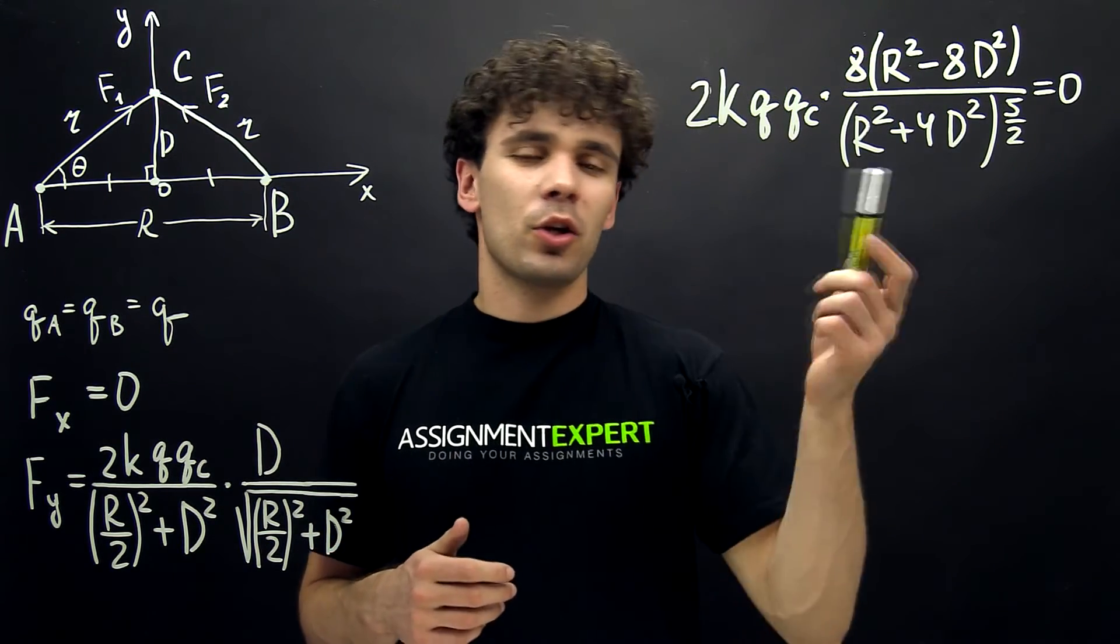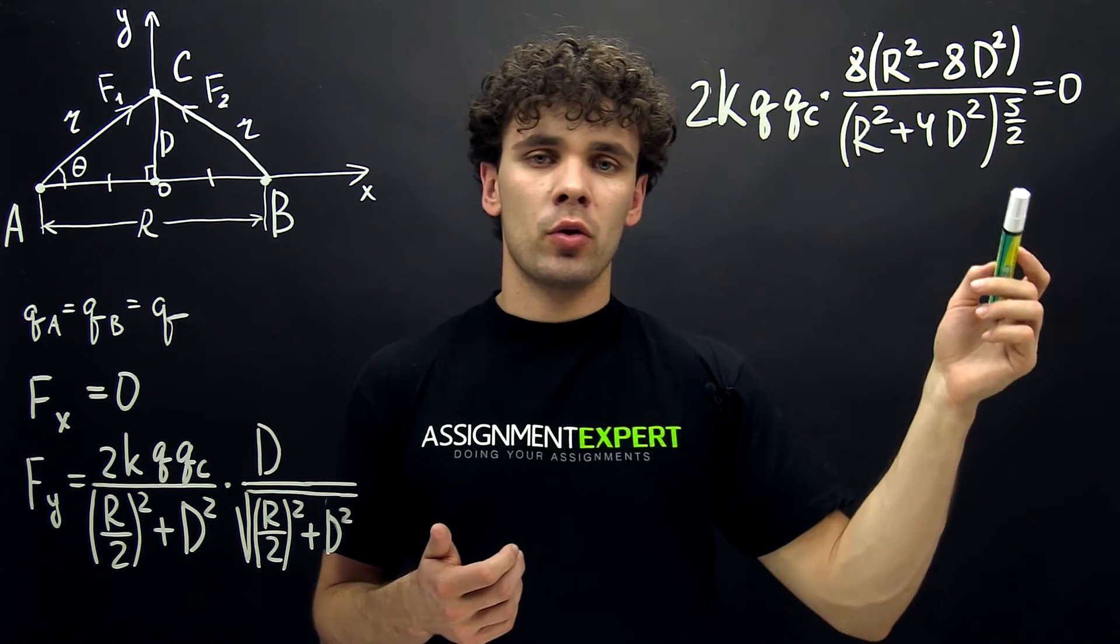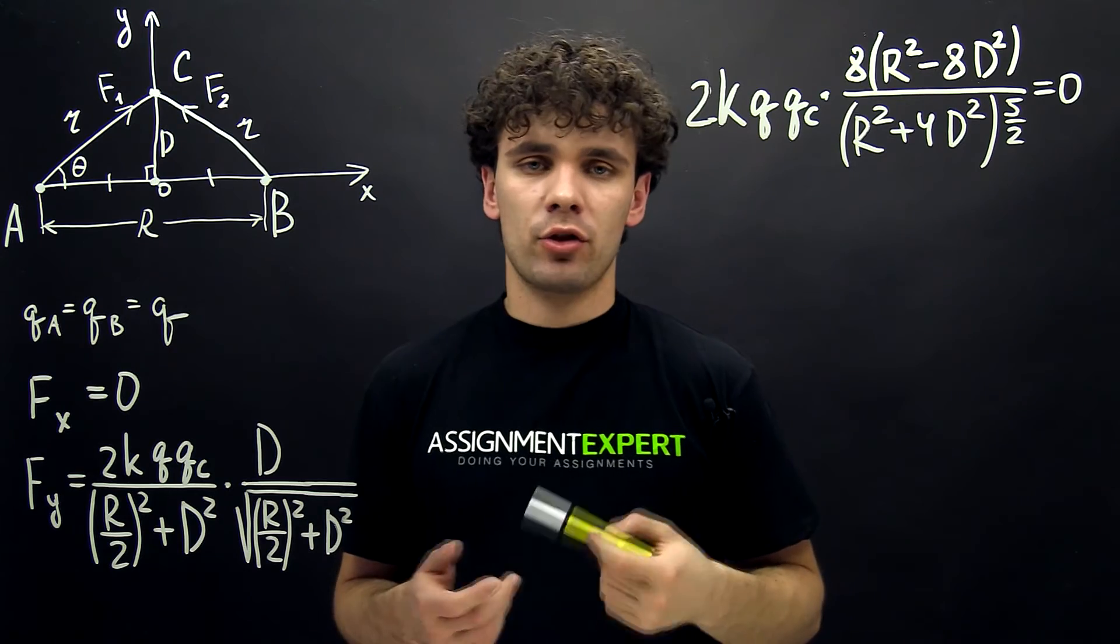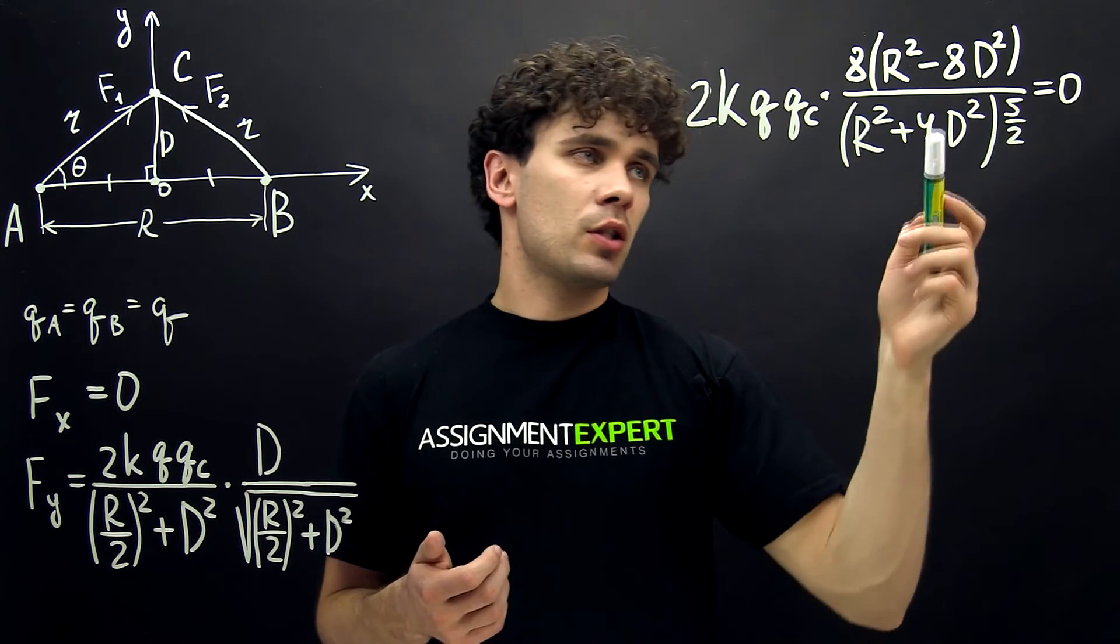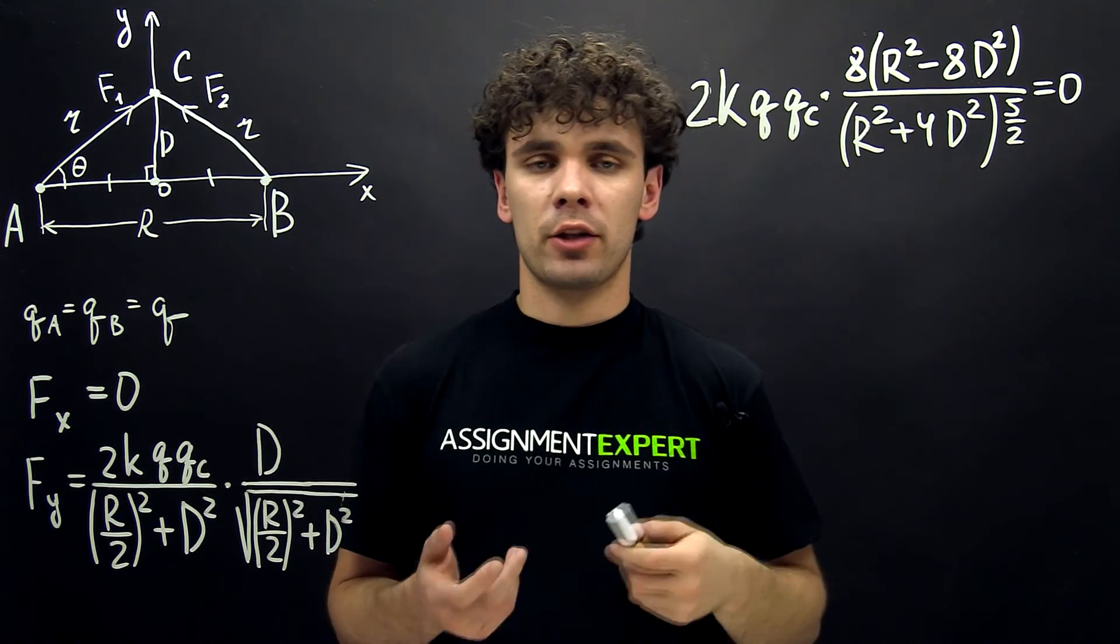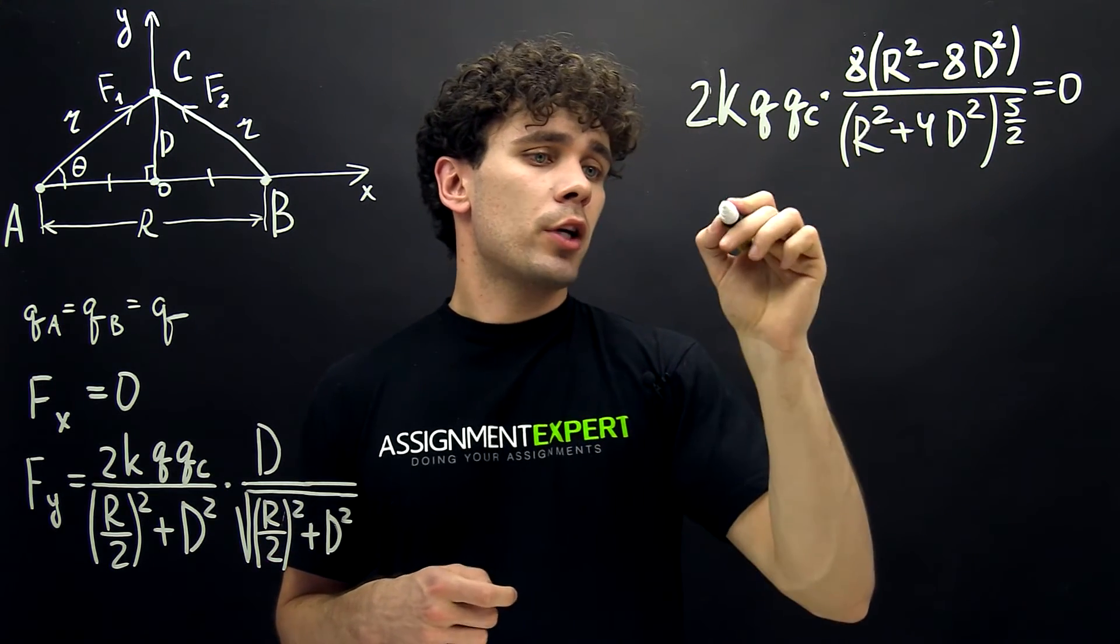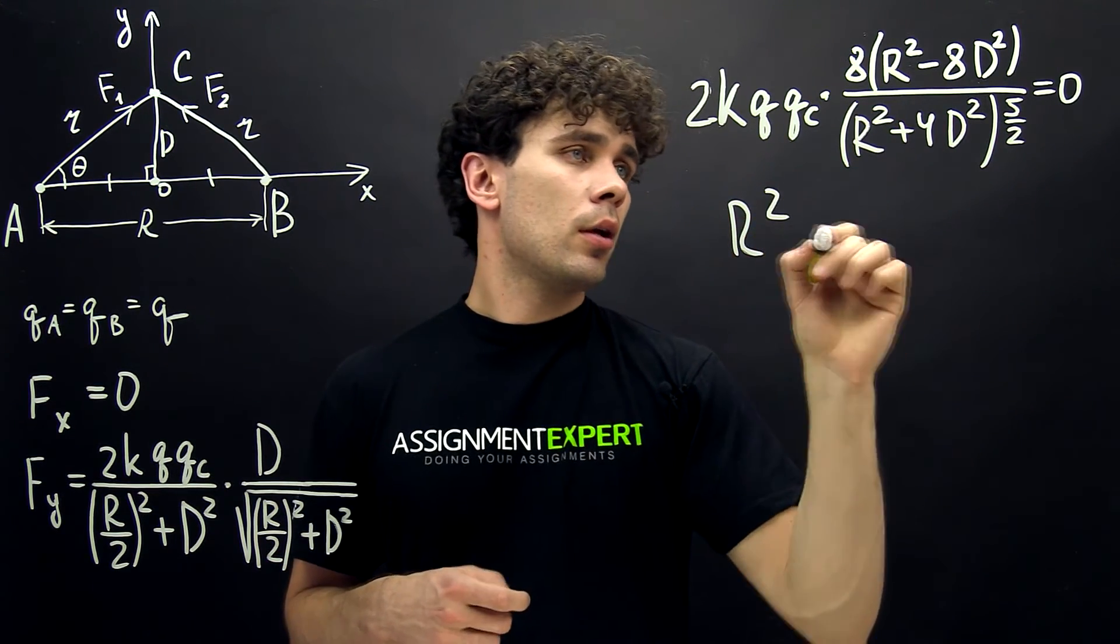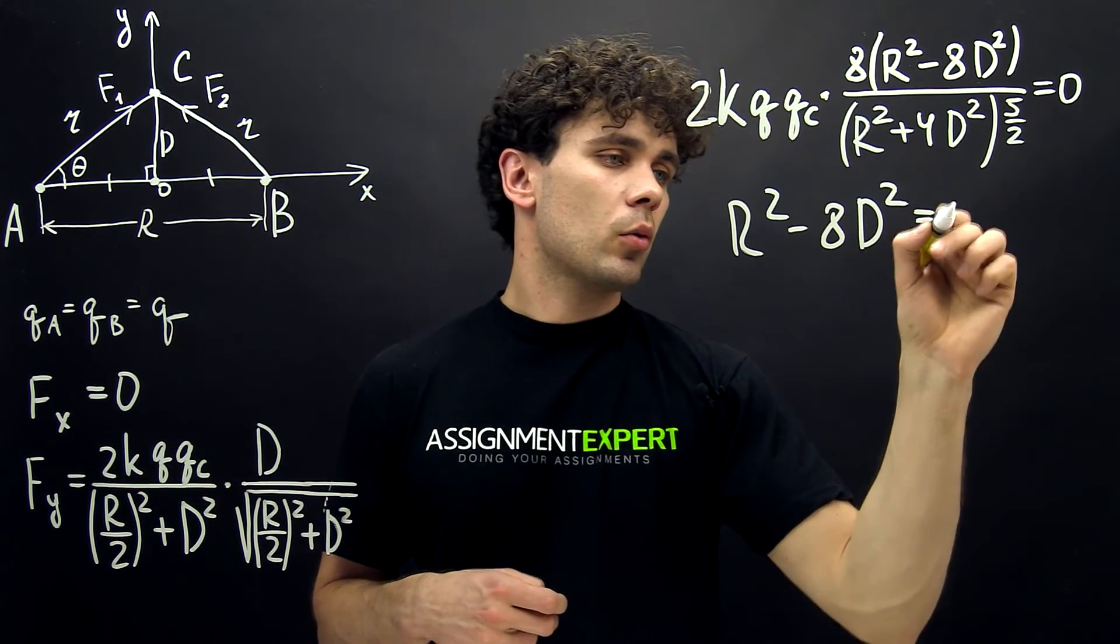So here I found the derivative, and we know that the derivative is equal to zero in order to get the maximum electrostatic force. Obviously, we need to consider the term which consists of D, because this is the term on which the electrostatic force depends. From here we get R squared minus 8D squared equals 0.